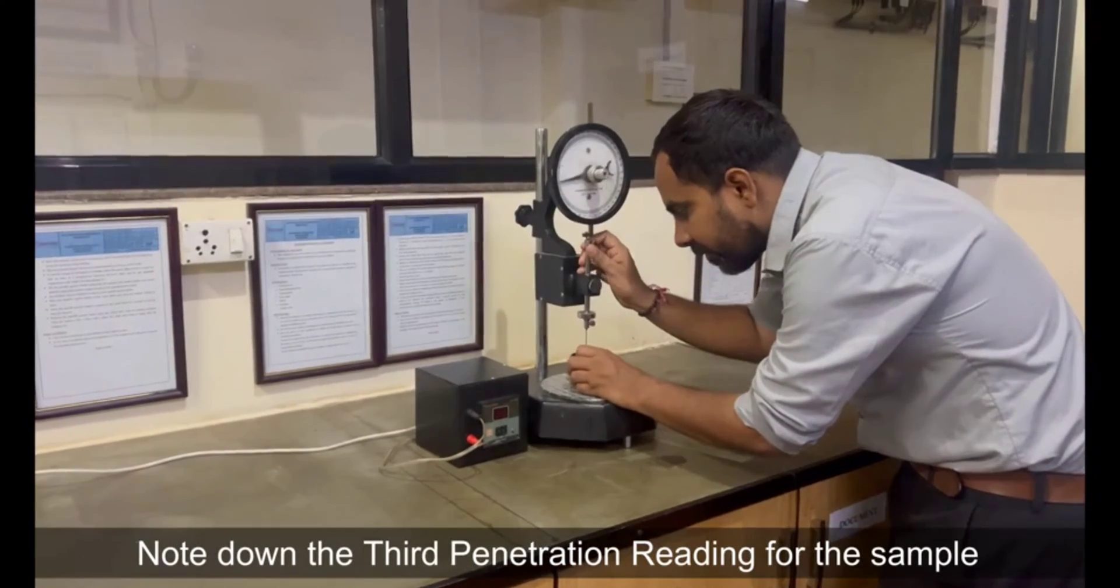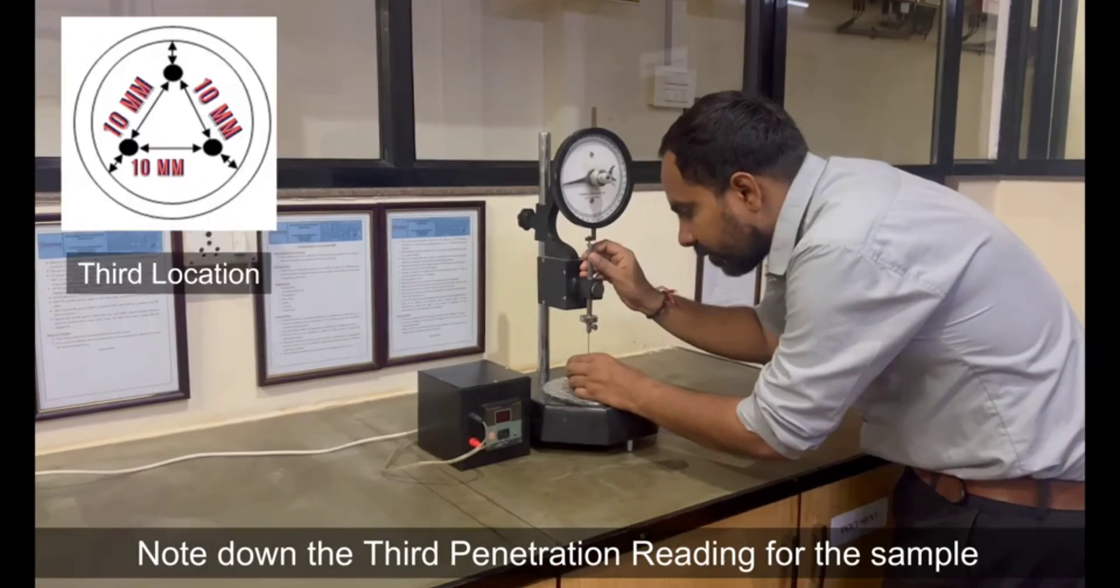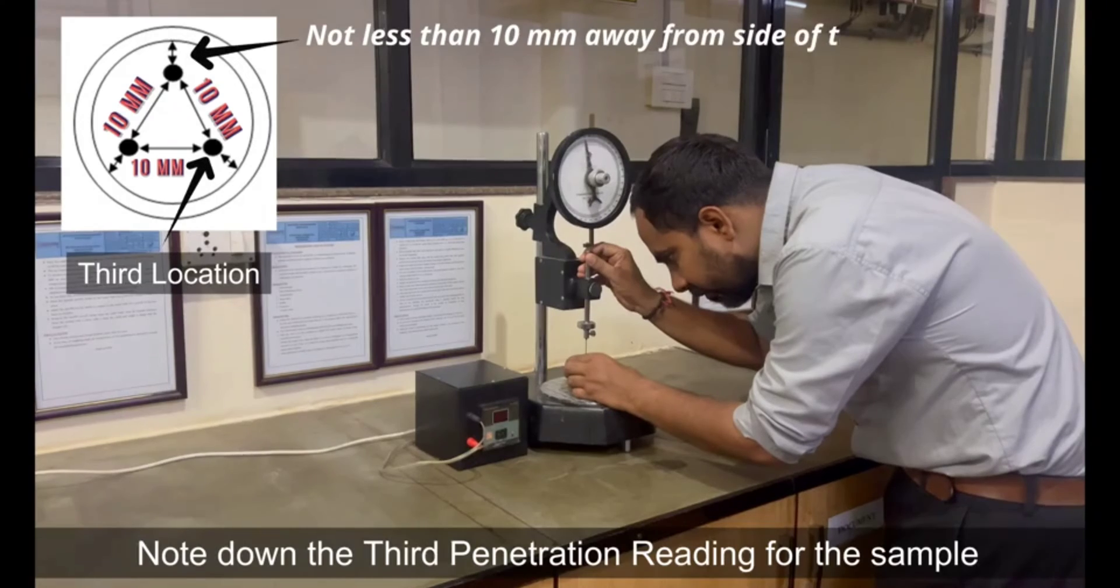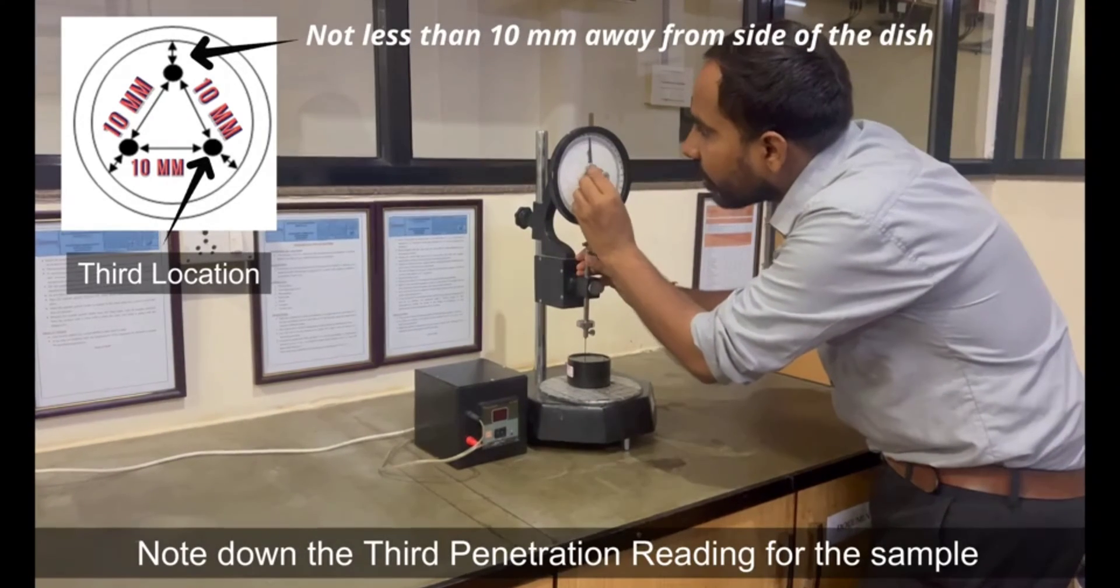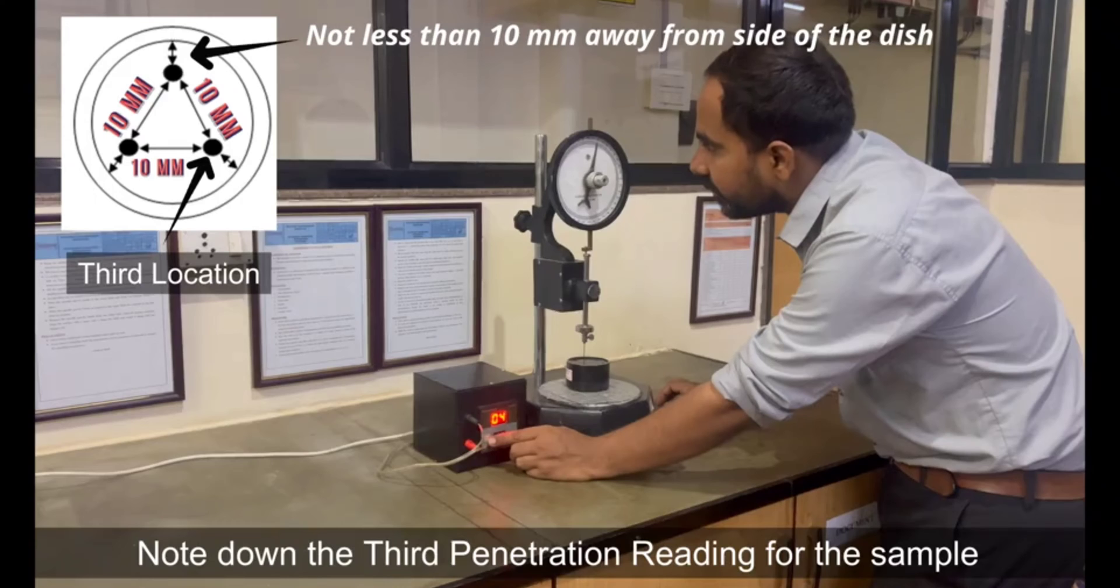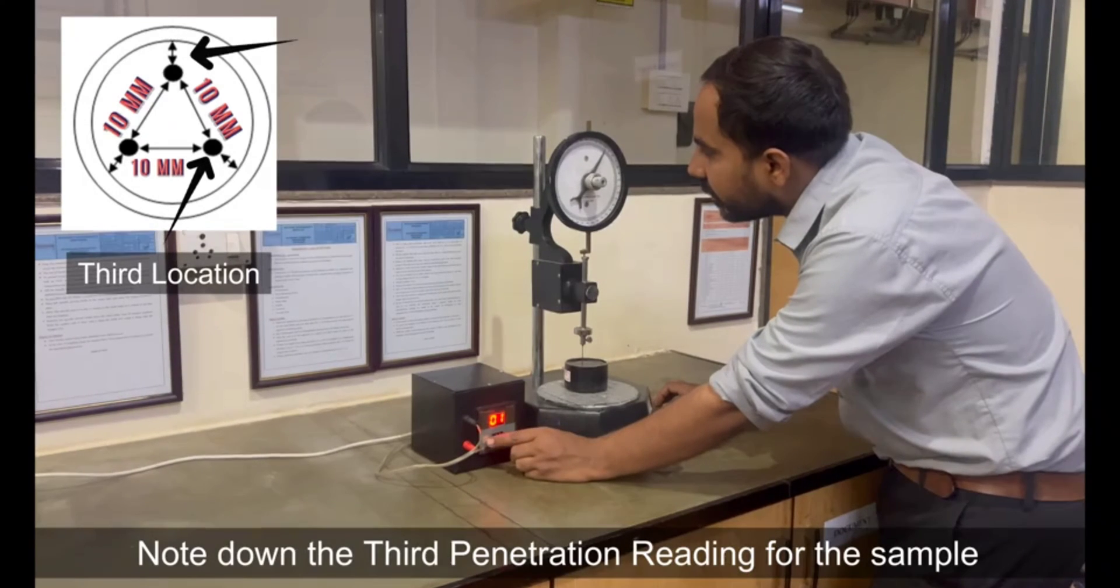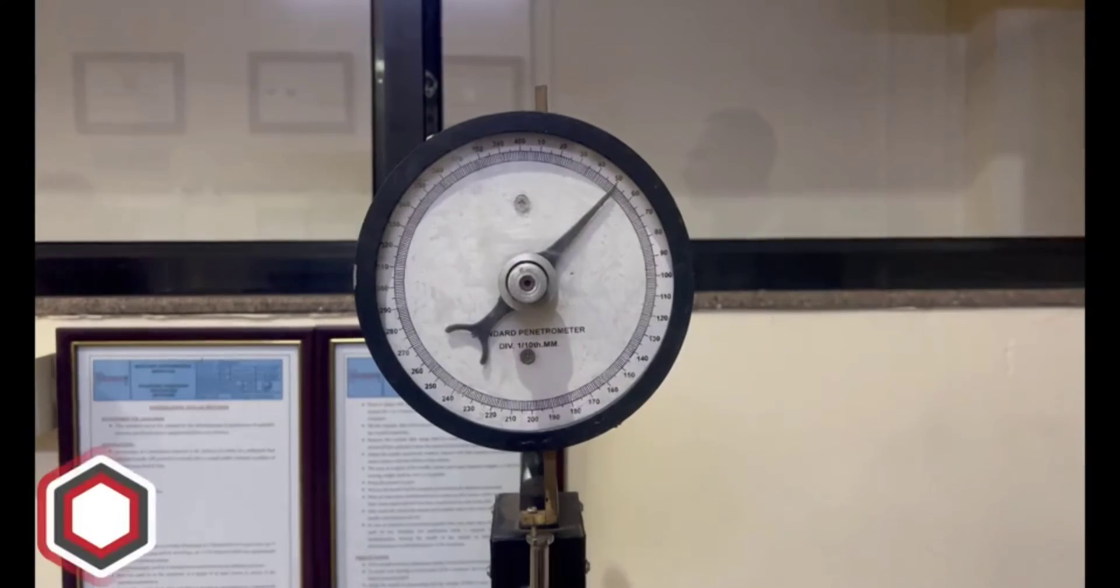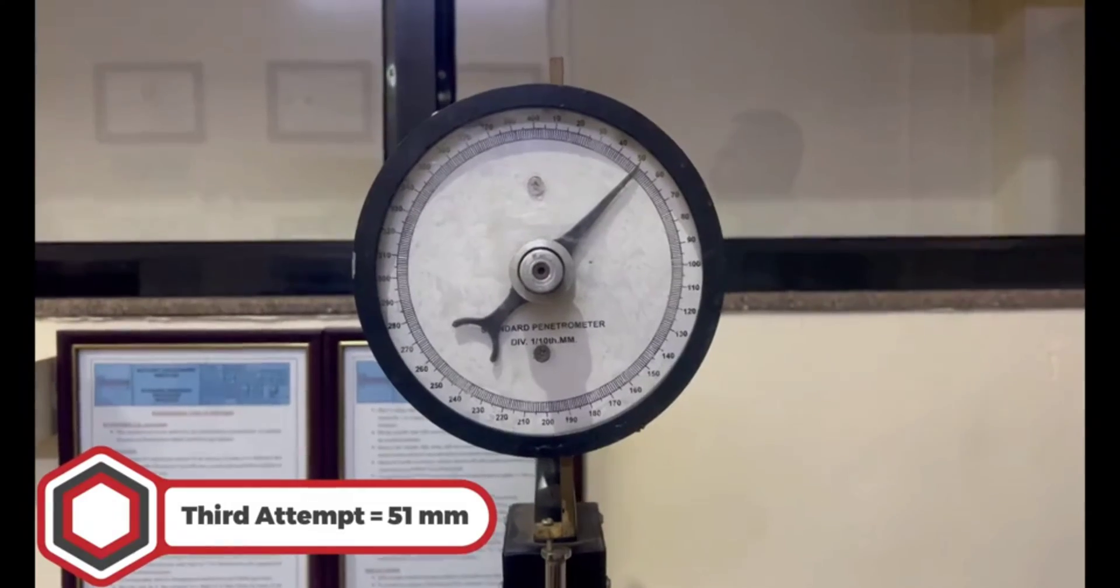Note down the third penetration reading of the sample. Set the dial gauge. Third location not less than 10 mm away from the side of the dish and first and second location of penetration. Release the needle for 5 seconds. Third attempt is 51 mm.